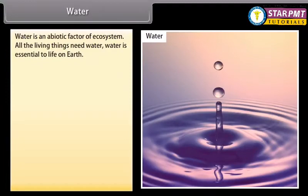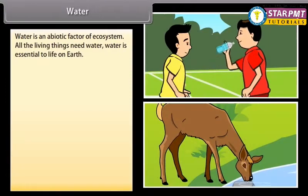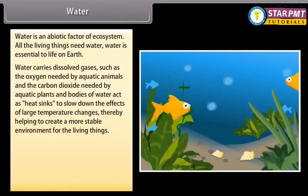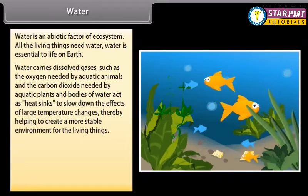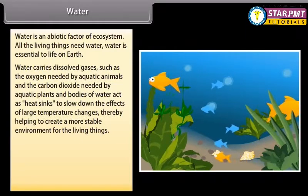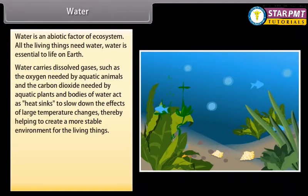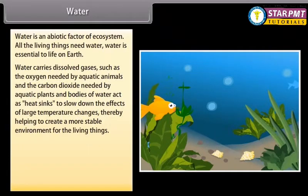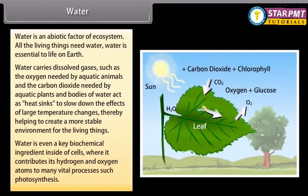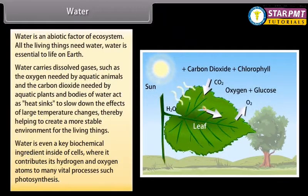Water is an abiotic factor of the ecosystem. All living things need water — it is essential to life on earth. Water carries dissolved gases such as the oxygen needed by aquatic animals and the carbon dioxide needed by aquatic plants. Bodies of water act as heat sinks to slow down the effects of large temperature changes, helping to create a more stable environment for living things. Water is also a key biochemical ingredient inside cells, where it contributes hydrogen and oxygen atoms to vital processes such as photosynthesis.